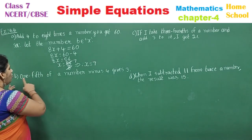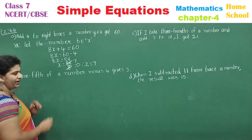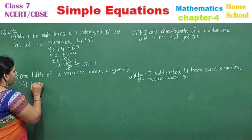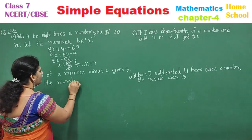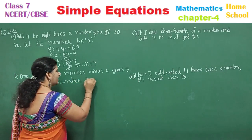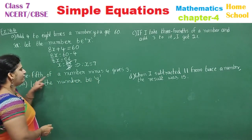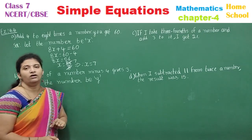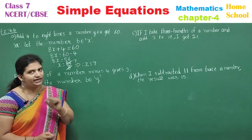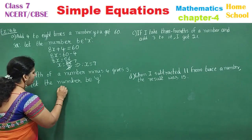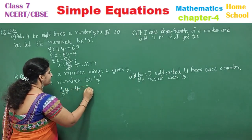Second sub-question: 'One fifth of a number minus 4 gives 3.' We don't know the number, so let the number be y. One fifth of a number means (1/5) × y, which we write as y/5. So the equation is: y/5 − 4 = 3.